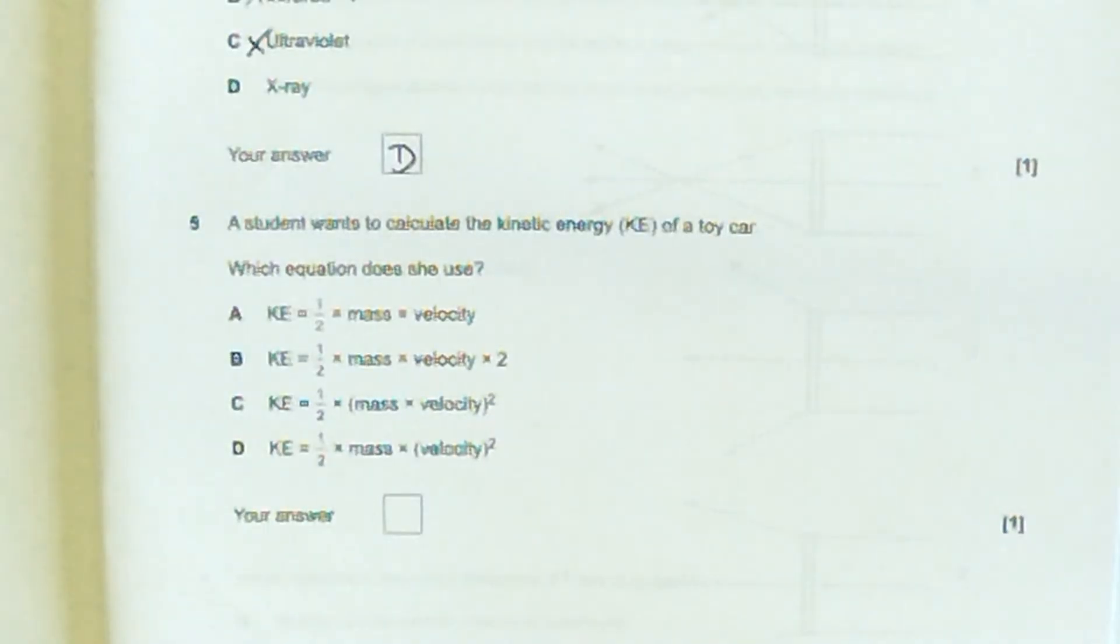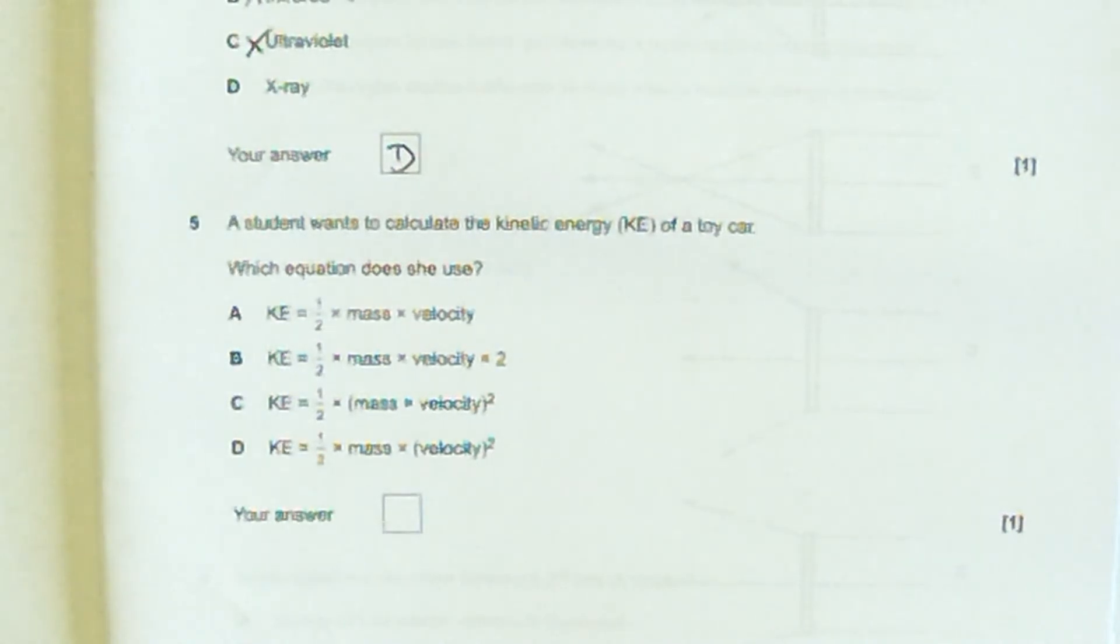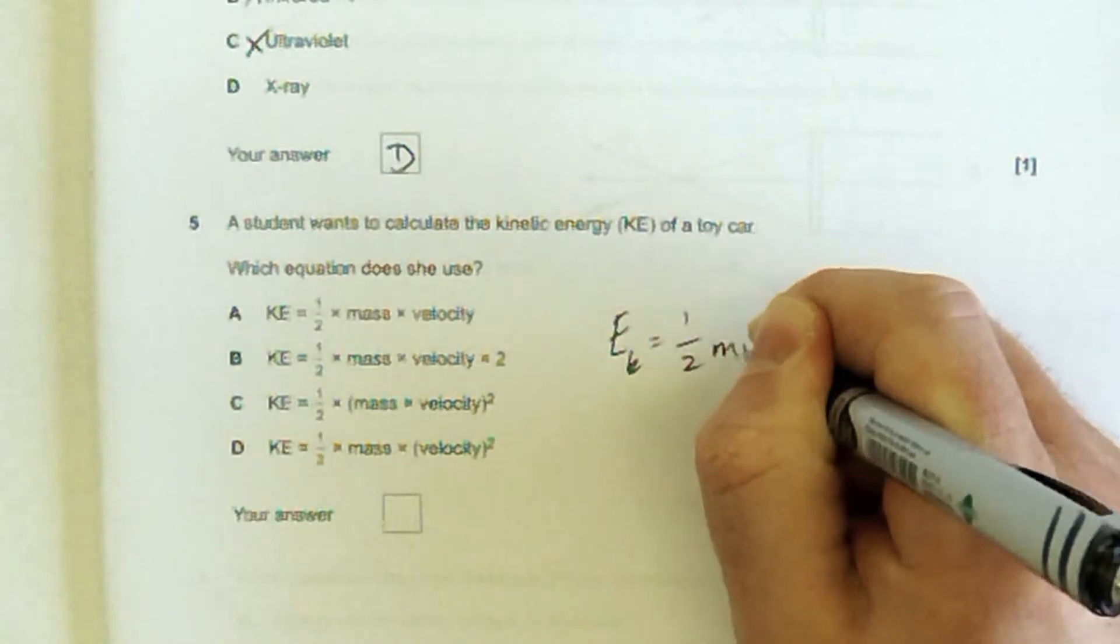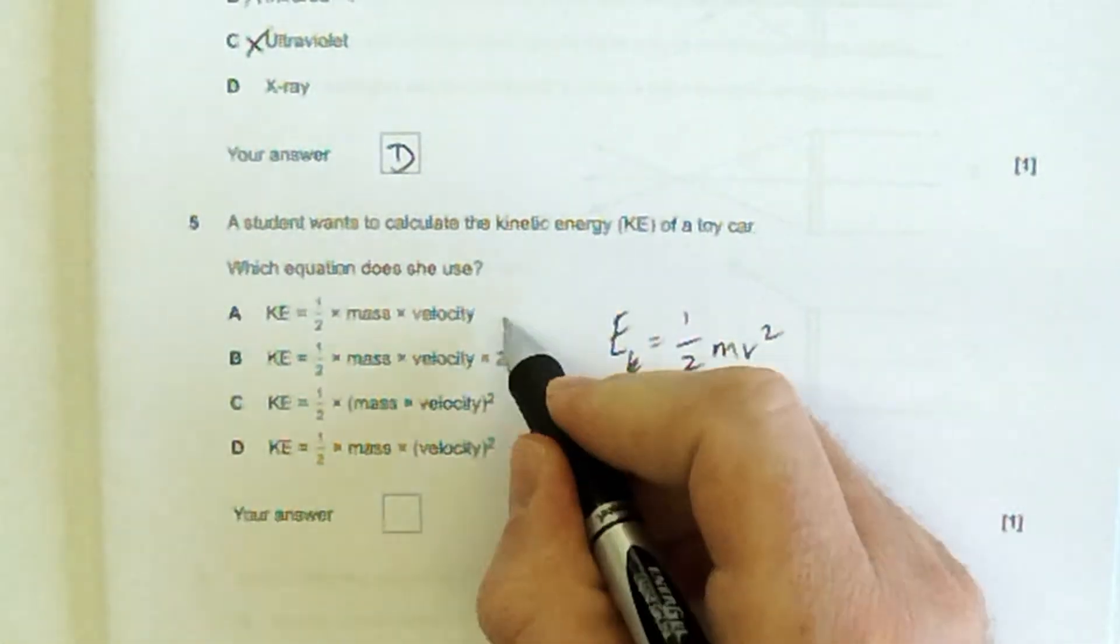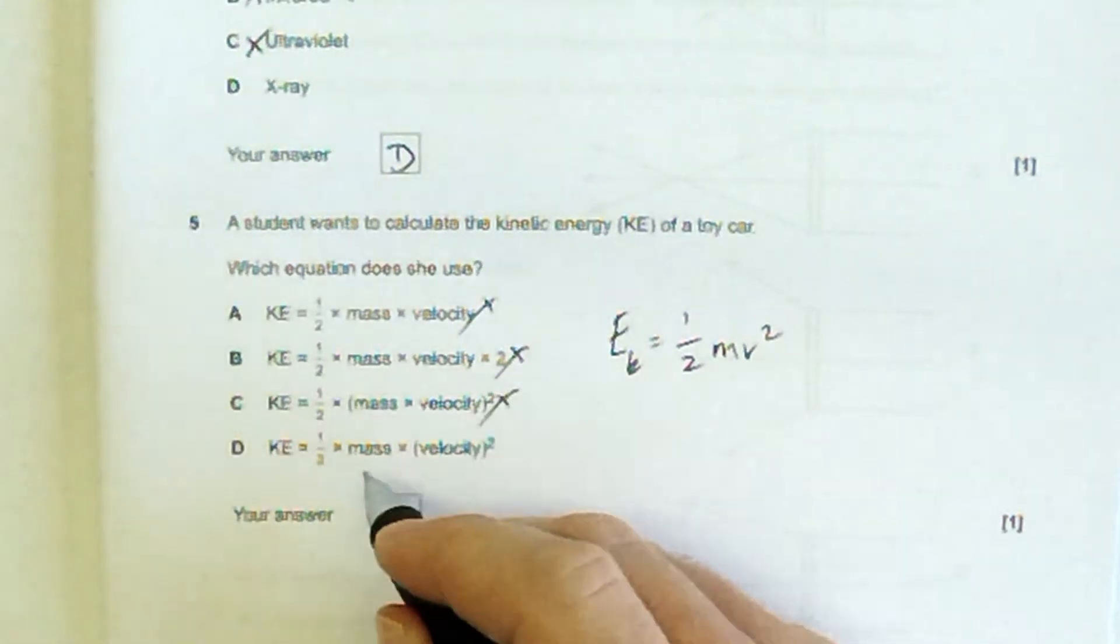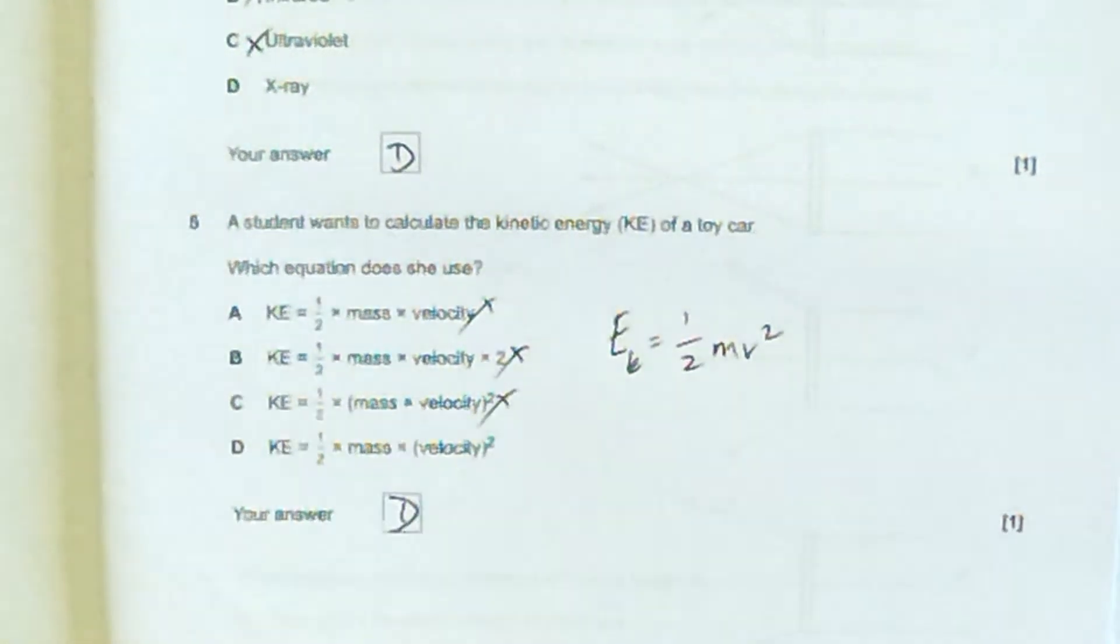The student wants to calculate kinetic energy of a toy car, so basically, do you remember the equation for kinetic energy? I just remember it in algebra. So which one says the same thing? Well, it's not that one because I haven't got the squared, it's not that one because it's not times 2, it's not that one because it's not mass and velocity squared, it's just mass times velocity squared, so the answer is D.